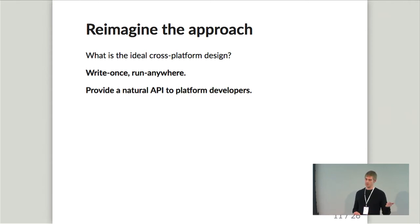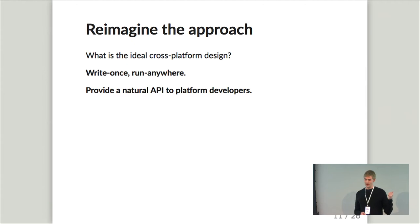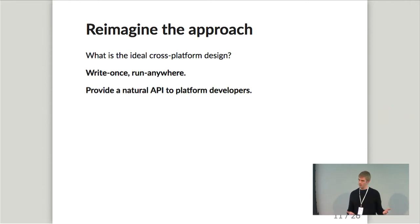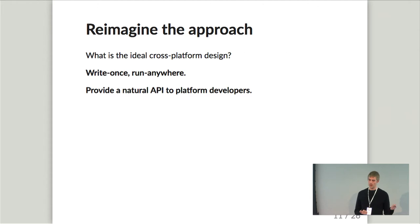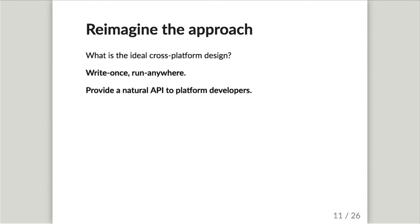Writing once and running anywhere has a few benefits. You can consolidate your features and, more importantly, your bugs in one place. And it insulates platform developers from details they shouldn't have to care about. We're working in a very complex domain, and the Java and Objective-C developers probably don't want to have to care about all the WebRTC stuff. The second thing is to provide a natural API to the developers — something they can interact with very easily. Ideally, you give them something exposed in the language they're working with: platform-specific language bindings.